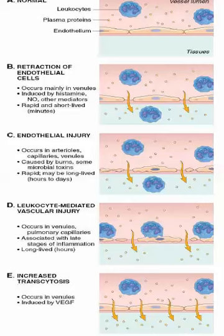We are now going to introduce some of the vascular changes and discuss changes in vascular flow, caliber, and increased vascular permeability. The main points we need to pay attention to are: dilatation, an increase in blood flow, epithelial gaps, direct injury, leukocyte injury, transocytosis (endo or exo), and formation of new vessels.